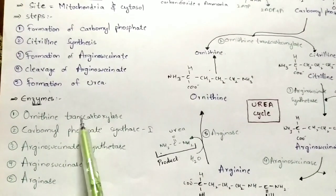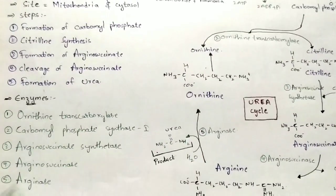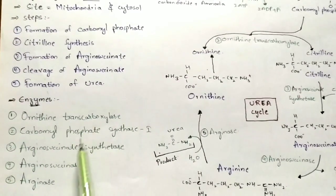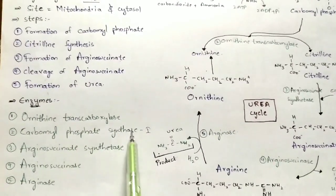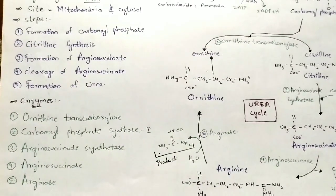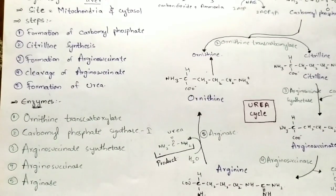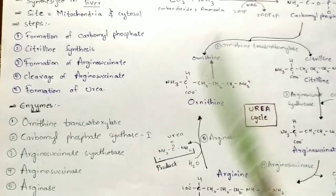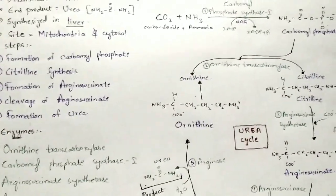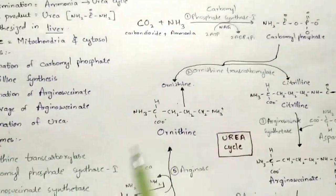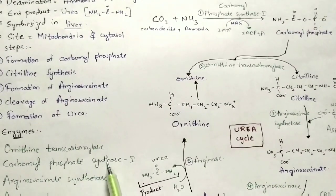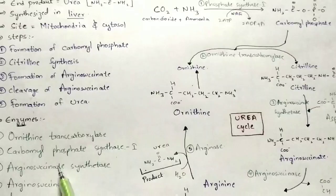Carbamyl phosphate synthase exists in two types: carbamyl phosphate synthase 1 and carbamyl phosphate synthase 2. Synthase 1 is used in the urea cycle, whereas synthase 2 is used in pyrimidine biosynthesis. In this video, the urea cycle will be explained using these enzymes.